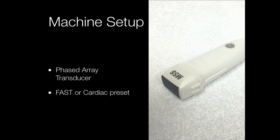From a machine standpoint, we're going to use a phased array transducer — this is a new one from last week. It has a narrow footprint and is a low-frequency transducer, so it penetrates into the body well. It has a unique design allowing really good imaging through the costal margin of the heart. For the cardiac FAST this transducer will be your best friend — it gets through those ribs well. Make sure you're using the FAST or cardiac preset to optimize machine functions.